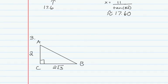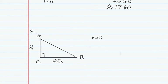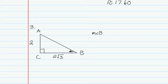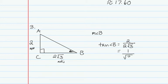A third type of problem is actually solving for an angle measurement. We can solve for the measure of angle B. According to angle B, we have the leg opposite and the leg adjacent, so we use tangent. The tangent of angle B equals opposite over adjacent: 2 over radical 3, which reduces to 1 over square root of 3.